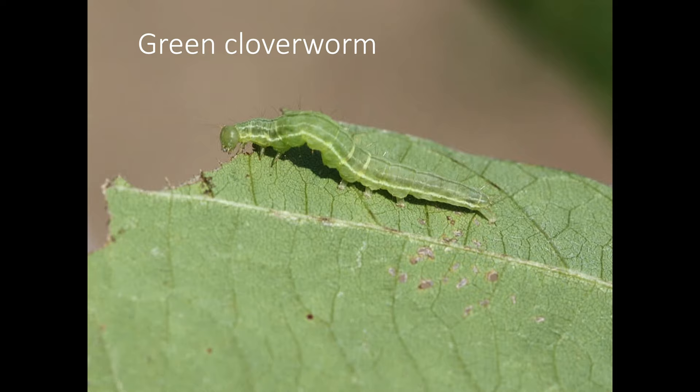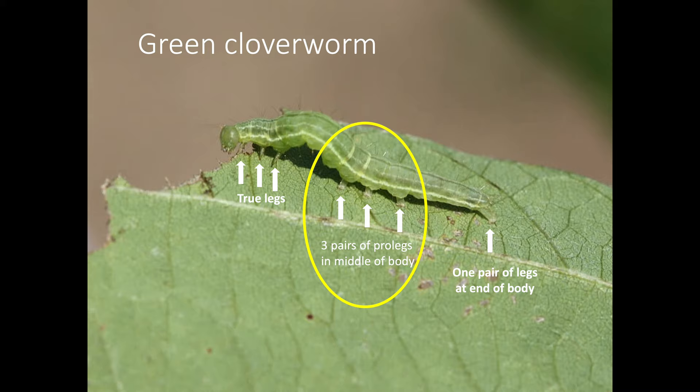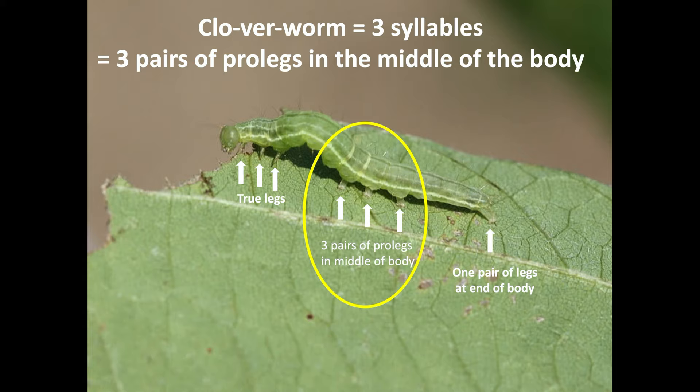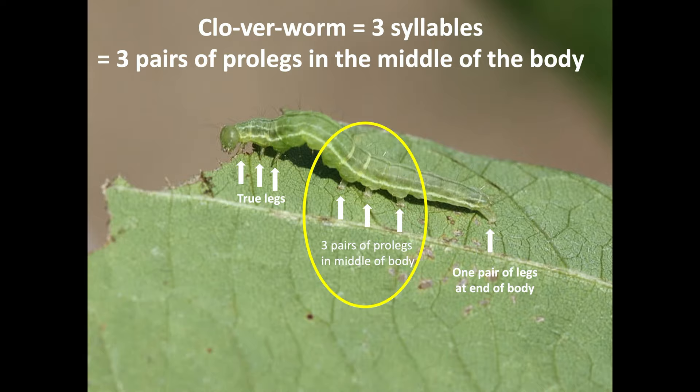All caterpillars we're interested in have legs at the front of the body called true legs and a pair at the back end at the last abdominal segment. But the legs we're most interested in are in the middle — they're called pro legs, and the number of pairs of pro legs in the middle of the body is often how we distinguish between caterpillar species. The way I remember: clover worm has three syllables — clover worms have three pairs of pro legs in the middle of the body. They will also wriggle spastically if you put one in the palm of your hand and prod it.